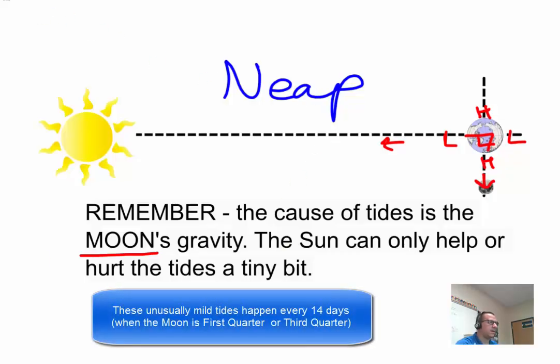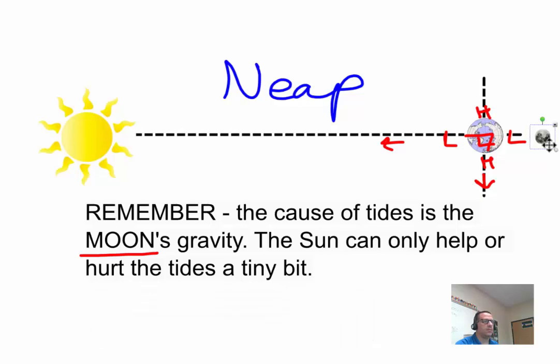Now how often do we have a neap tide? Well, same thing. It takes this moon 28 days to do one complete revolution. So from here, so 28 days. From here to here is 7 days. Now we're all lined up. We're in a spring tide.